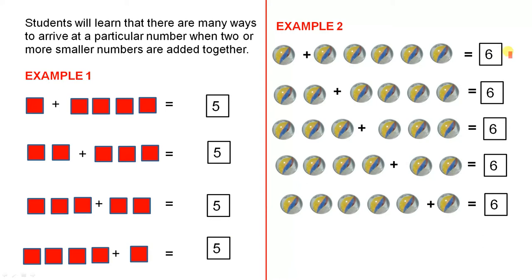Example 2, if we wanted to arrive at the number 6 by adding two smaller numbers together. 1 plus 5 equals 6, 2 plus 4 equals 6, 3 plus 3 equals 6, 4 plus 2 equals 6, and 5 plus 1 equals 6.